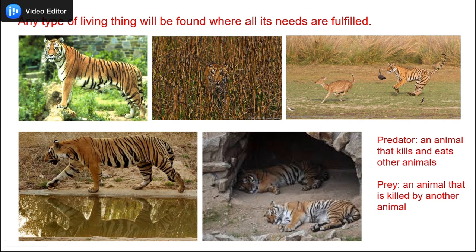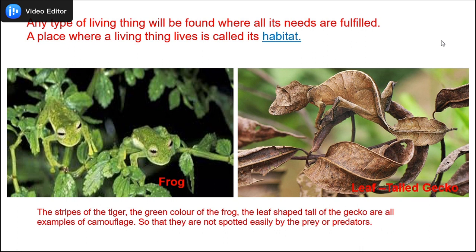Any type of living thing will be found where all its needs are fulfilled. On your screen you can see the tiger — it has stripes on its body. The stripes help the tiger to hide from its prey in tall grass, so the prey is not able to spot it, and choosing the right time, it hunts its prey. You can see the tiger chasing the deer. A tiger always stays near a water hole and a cave where it can keep its young ones safe. Here we learn two new words: predator — an animal that kills and eats other animals; here, the tiger is the predator. Prey — an animal that is killed by another animal; here, the deer is the prey. A place where a living thing lives is called its habitat.